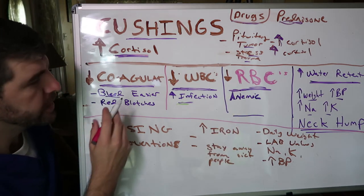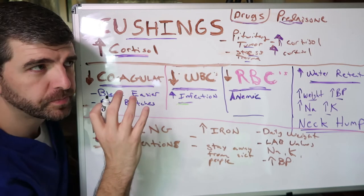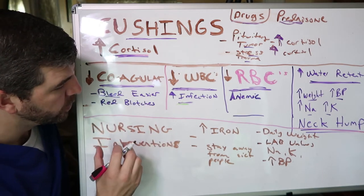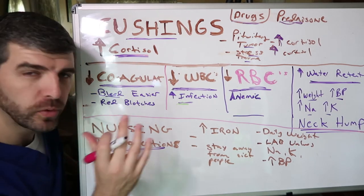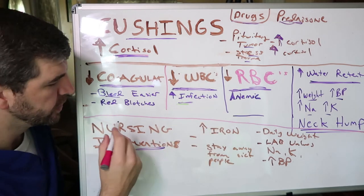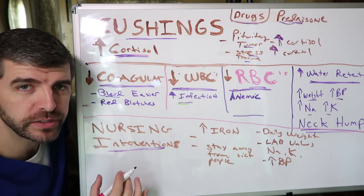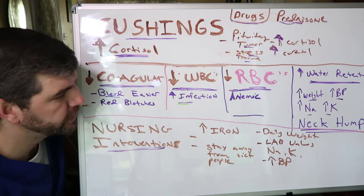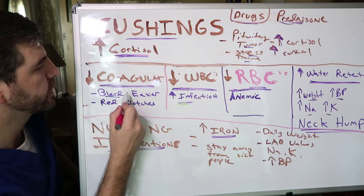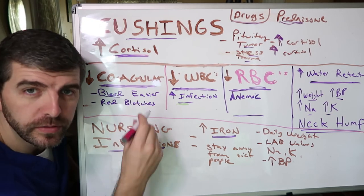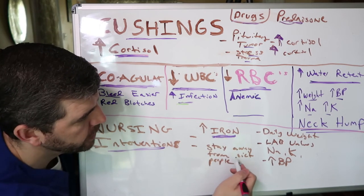Now let's go into the nursing considerations and interventions for Cushing's disease. One of the interventions is to tell the patient to increase their iron intake to help with clotting, due to the decreased coagulation. Because of the decrease in white blood cells, we're also going to tell them to stay away from sick people.